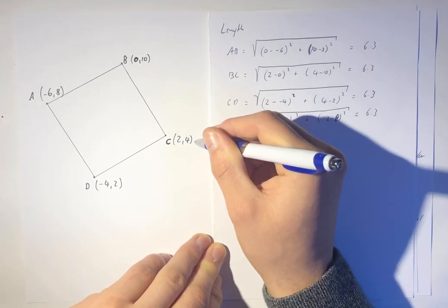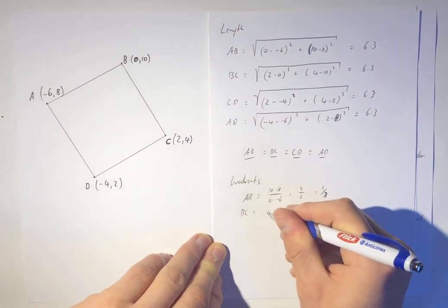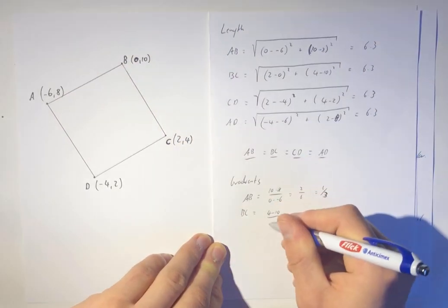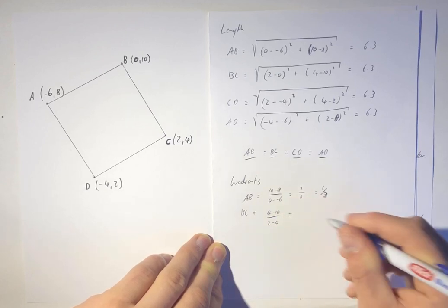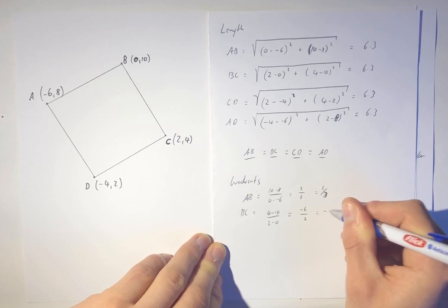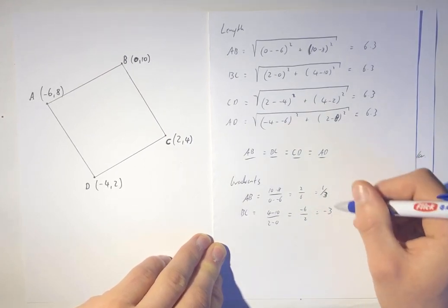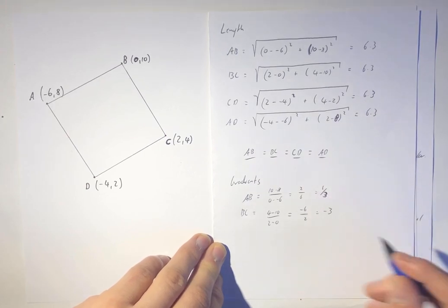BC, rise over run, so that's going to be 4 minus 10 over 2 minus 0. Show my working all the way through, so it's going to be negative 6 over 2, which is negative 3. So immediately I can see that's a negative reciprocal that's going to multiply to negative 1, so they must be perpendicular, so that's a right angle.